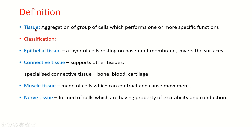Before going to epithelial tissue, let us define what tissue is. Tissue is an aggregation or group of cells which performs one or more specific functions. There are four basic types of tissues: epithelial tissue, connective tissue, muscular tissue, and nervous tissue.